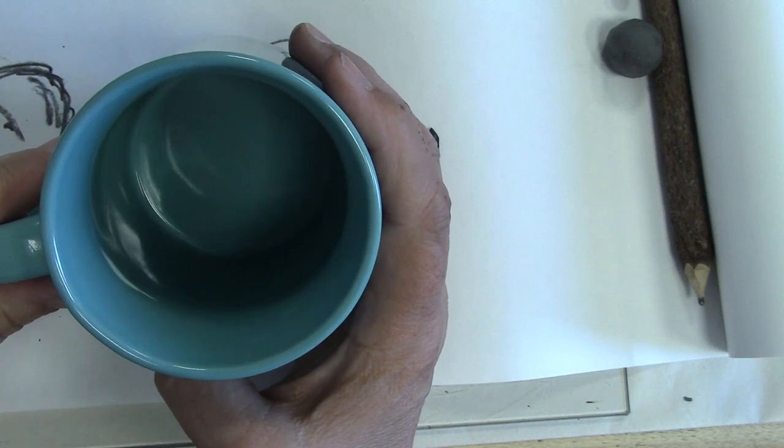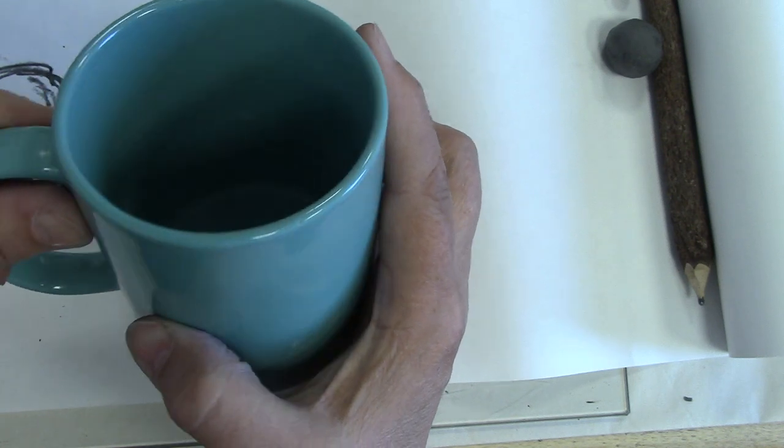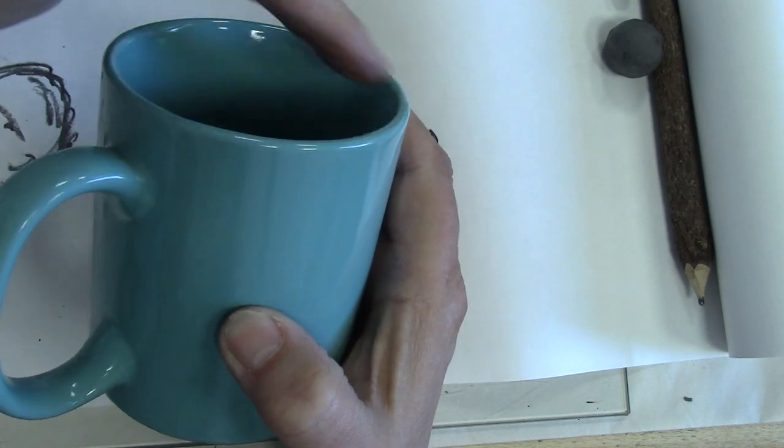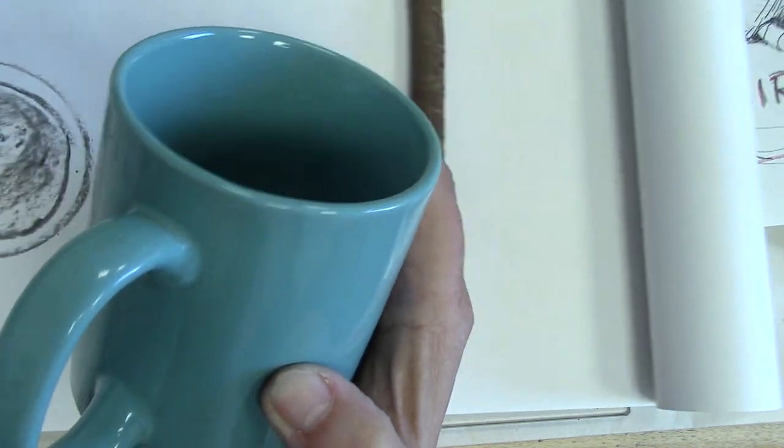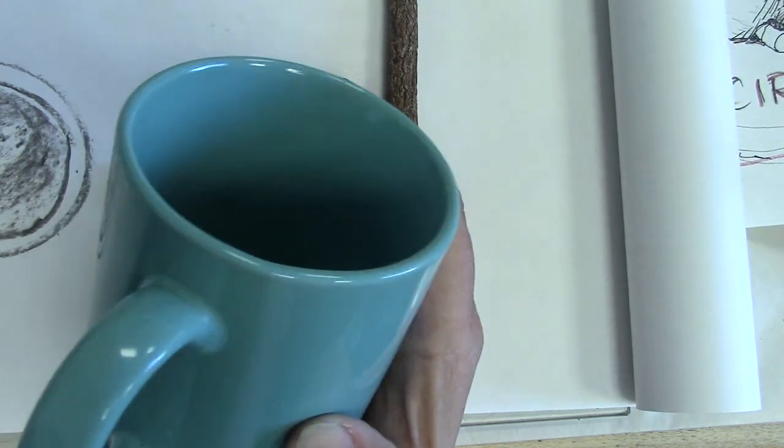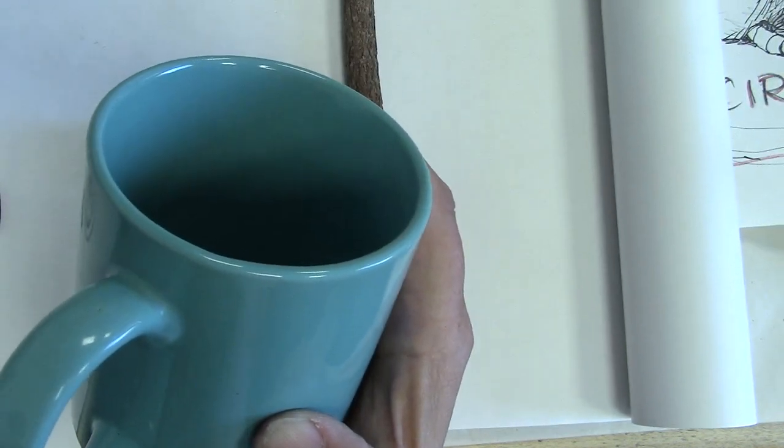So when we want to draw that circle, we have a problem. Because we want to turn it on its side and it's no longer round. What do we do? Easy. Not a problem. I'll just show you what we do.